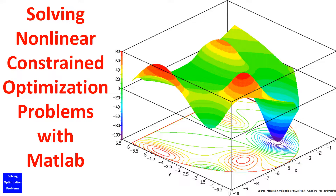To enhance the robustness of the solver, I use a simple code for running the solver multiple times — say, 10 times — each with a random initial solution. The final solution is the best solution found in all the runs. Thereby, the chance to get the global optimal solution is significantly improved.